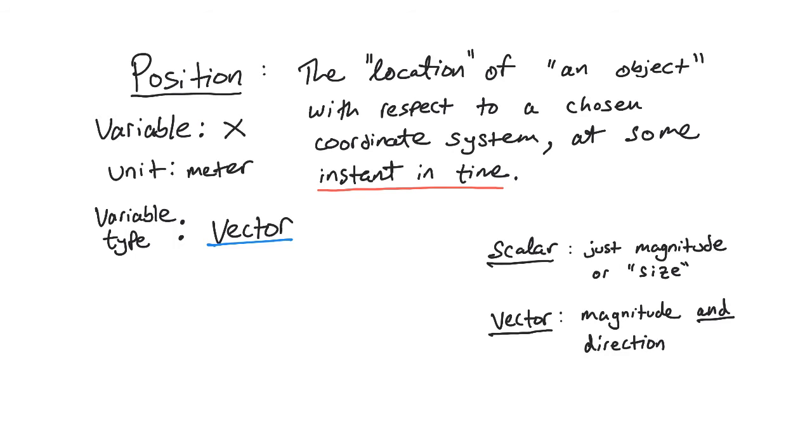I'll give you an example in the context of position here in just a second. And then also these quantities that are vectors have what's called magnitude. Now that's in contrast to scalars which just have magnitude. And to give you a sense of what this word magnitude means, well, it's synonymous with size.